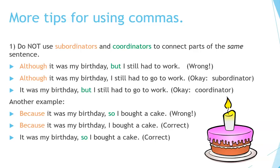Another example: 'Because it was my birthday, so I bought a cake' is wrong — do not use both 'because' and 'so' in the same sentence. Use one or the other. Correct: 'Because it was my birthday, I bought a cake.' Or: 'It was my birthday, so I bought a cake.'